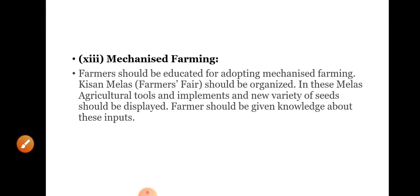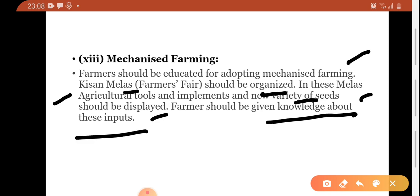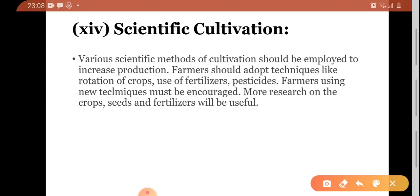Next is mechanized farming. Farmers should be educated for adopting mechanized farming. Kisan melas should be organized — in these melas, agriculture tools, implements, and new variety of seeds should be displayed. Farmers should be given more knowledge about their inputs. If latest techniques are available, farmers should learn those techniques to improve their productivity and welfare so that farmers do not go into stress.